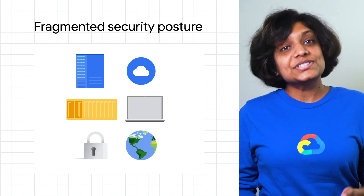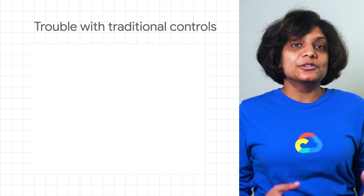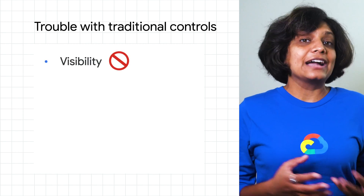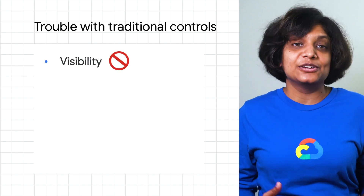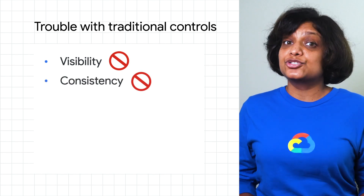Some problems with older methods are lack of visibility into what is happening on your networks, and lack of consistency in terms of controls or policies. Enabling a zero-trust security posture can help you solve these issues and also modernize your security for hybrid and multi-cloud deployments. And Anthos equips you with all you need to implement a zero-trust model.